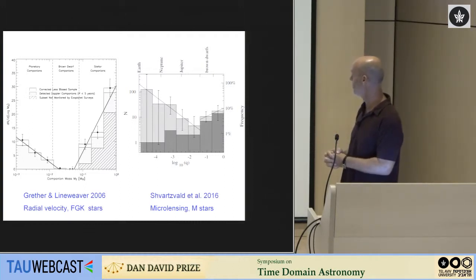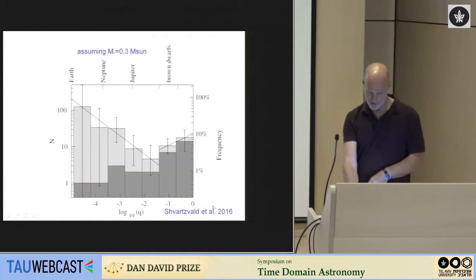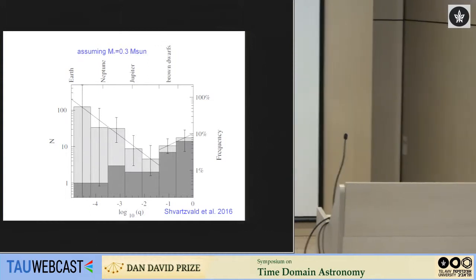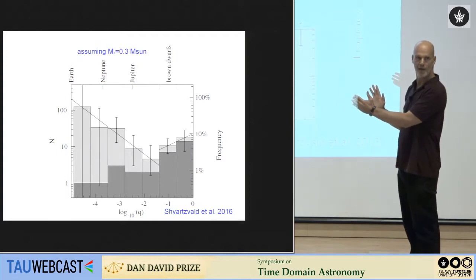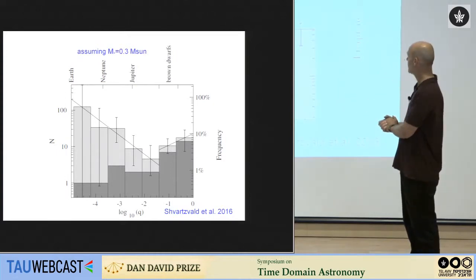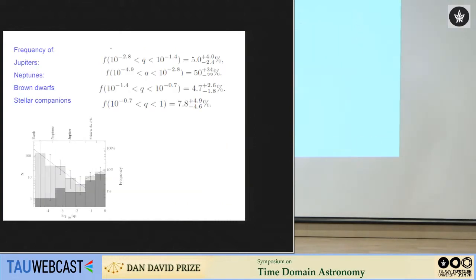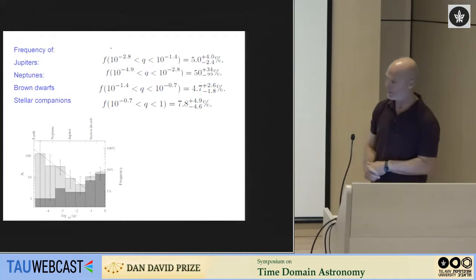And found what fraction of those we found for every range in parameter space of physical parameter space of the planets we actually recover. So this is an example, the central curve here would be the detection efficiency for one particular lensing event as a function of the mass ratio between the planet and the host star. So you see that, for example, for Jupiter mass planets that are around here, you discover a planet if it's there 10 or 20 percent of the time. And of course, every event has its own efficiency curve.